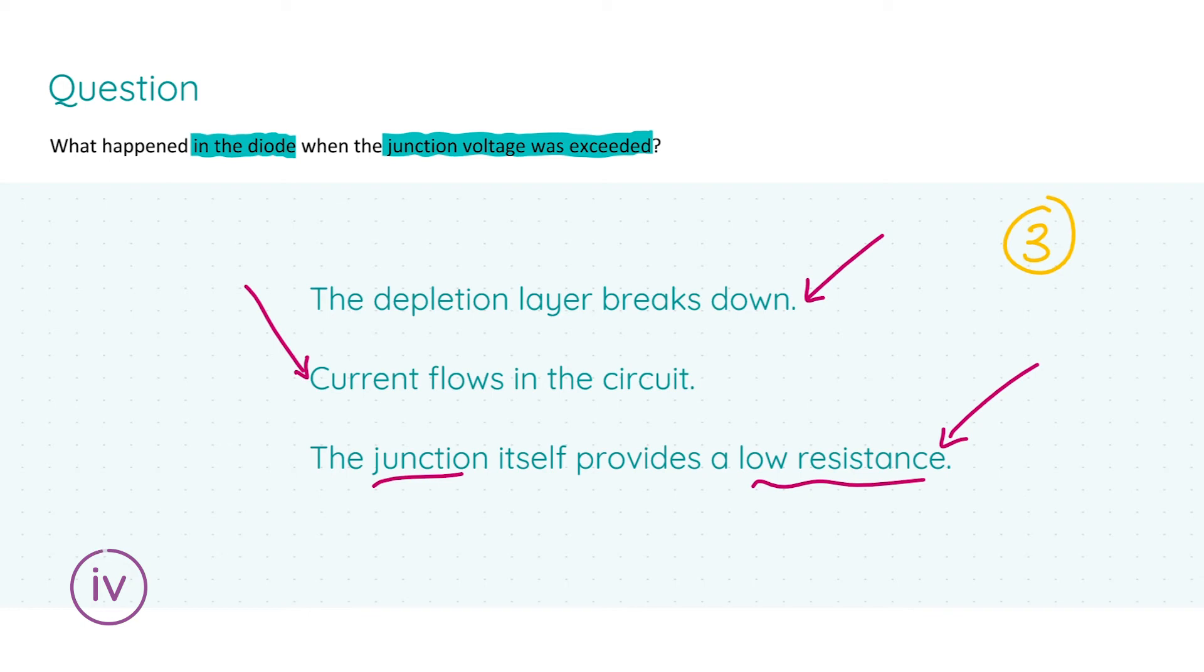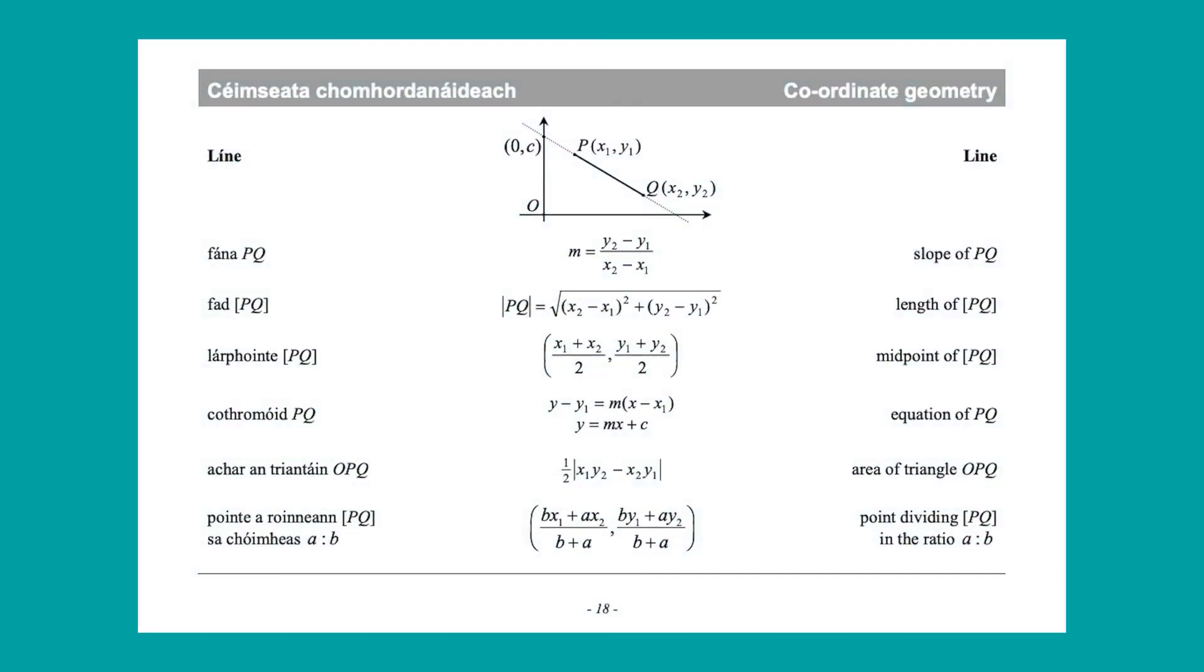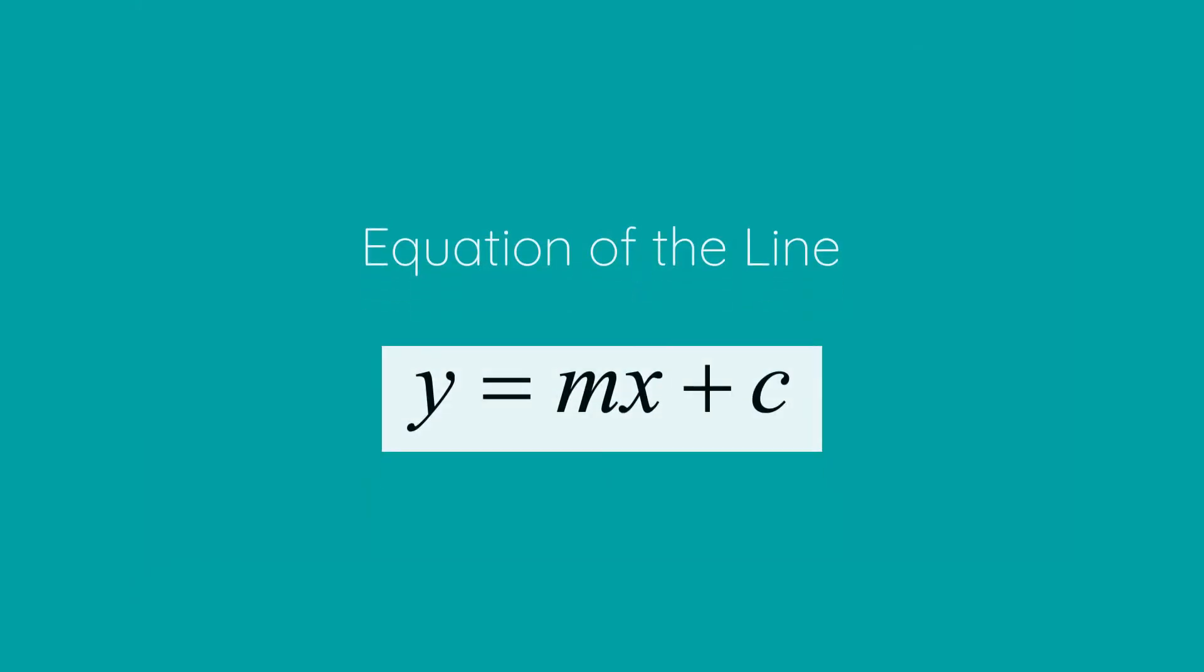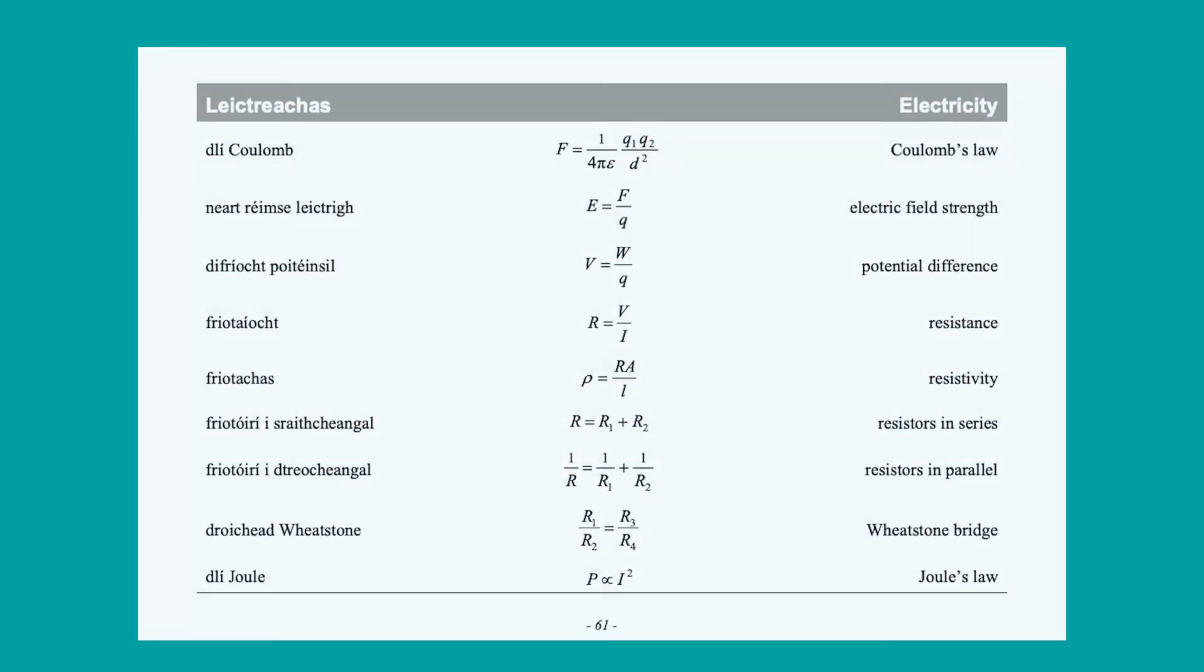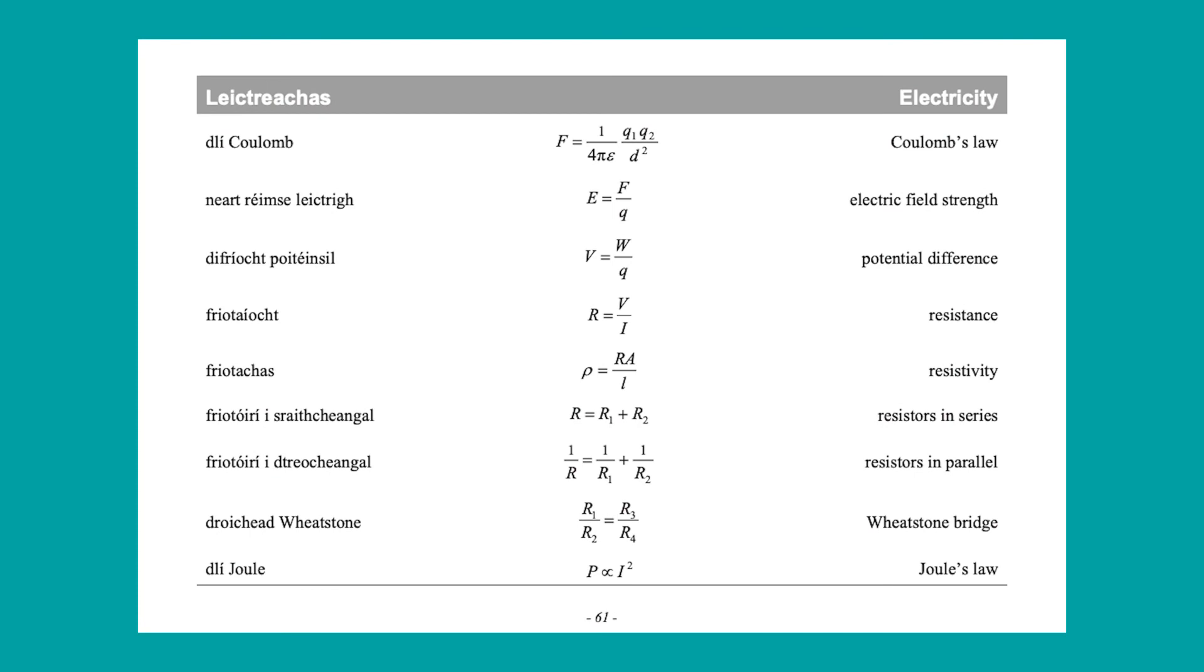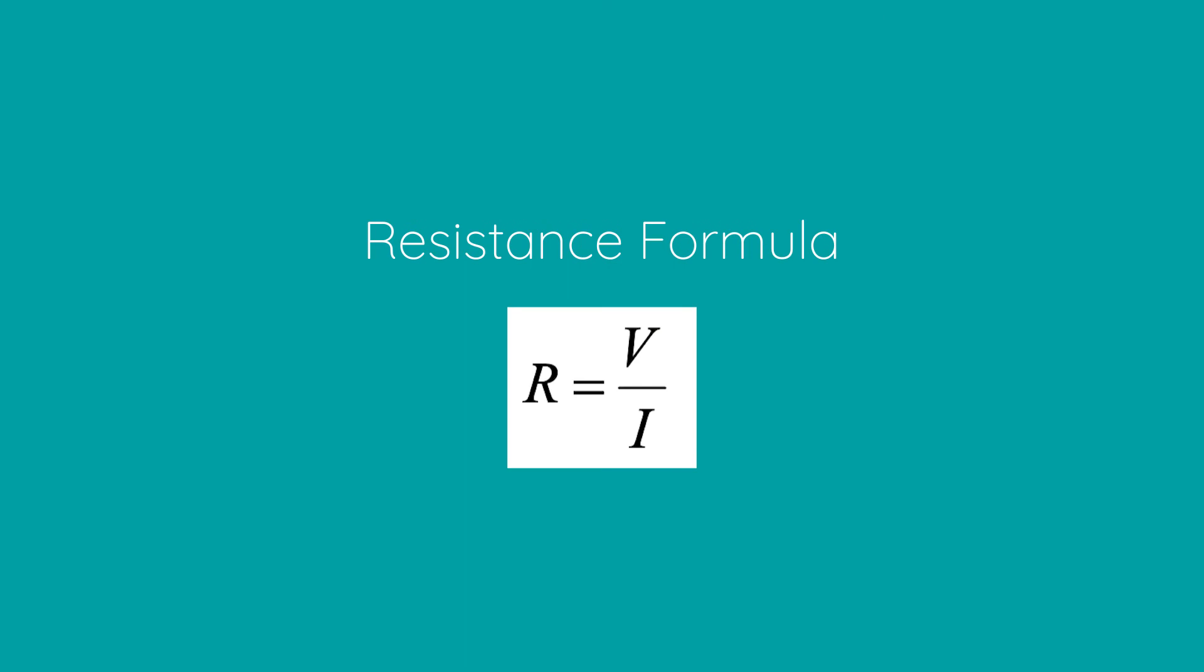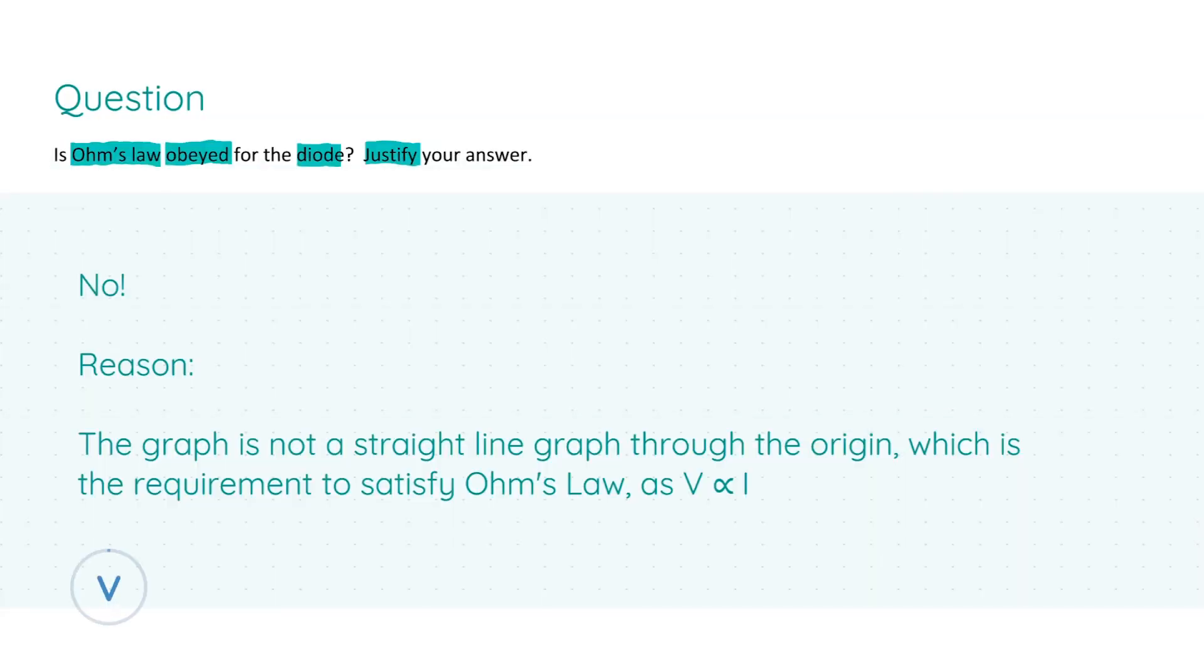Before we move on to the next part, I want to draw your attention to page 18 of the formula and tables book where I'm going to be looking at the equation of the line formula y equals mx plus c, but also page 61 where we're looking at Ohm's law under the resistance formula. For this question we're asked: is Ohm's law obeyed for the diode, and we're asked to justify our answer.